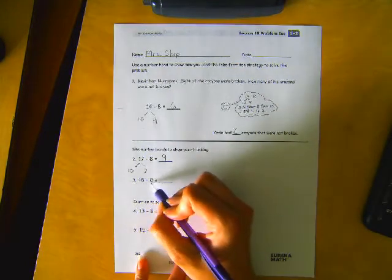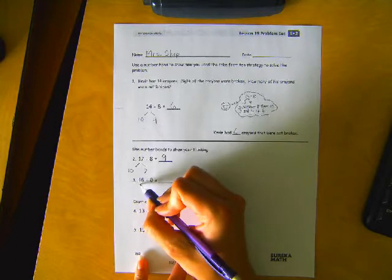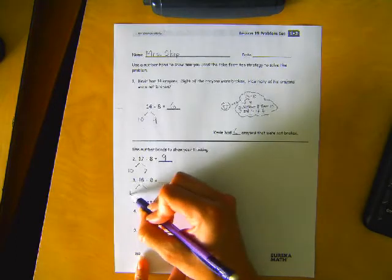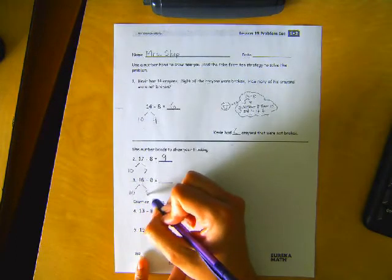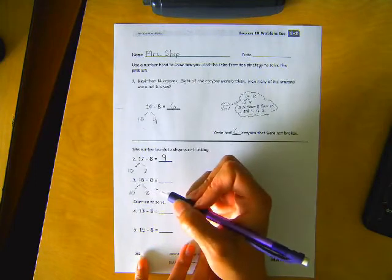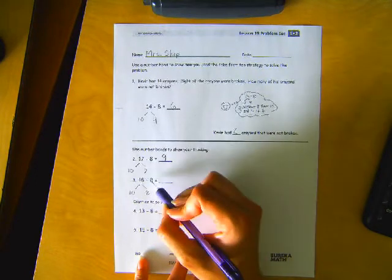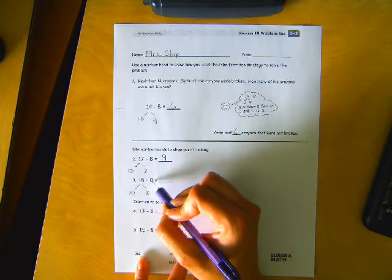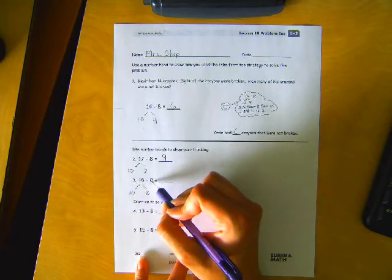Okay. We have 18 minus 8 equals blank. 18 can be broken up into a 10 and an 8.